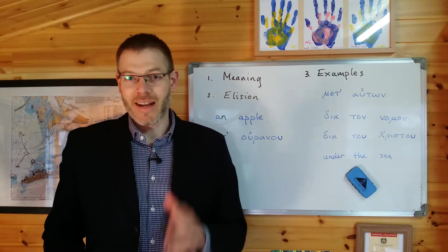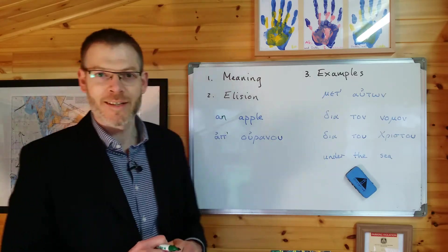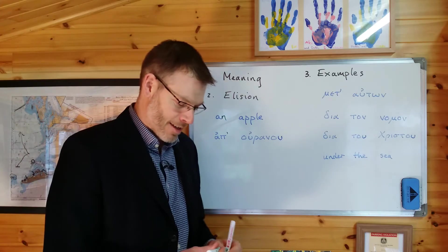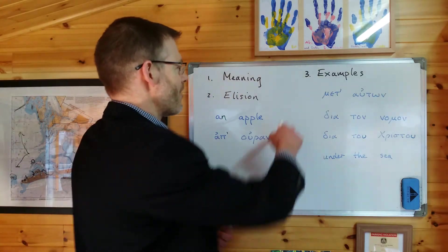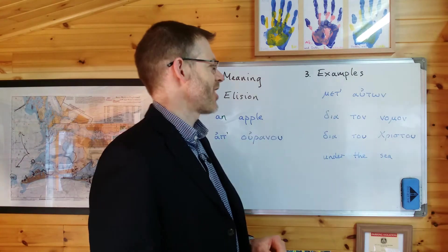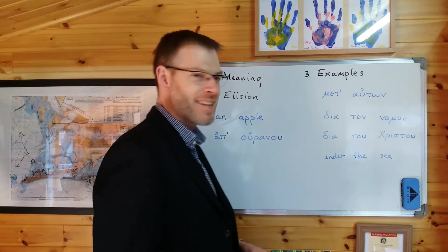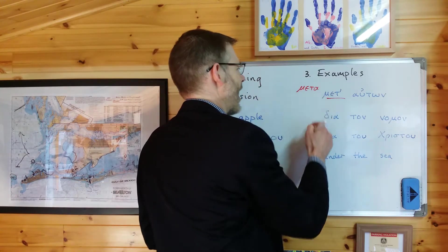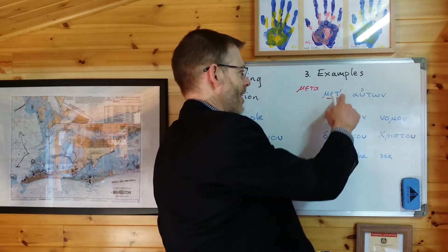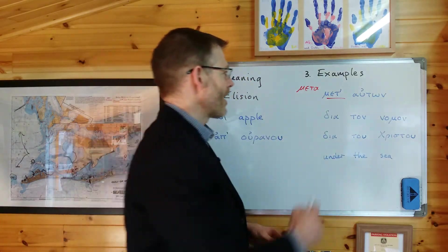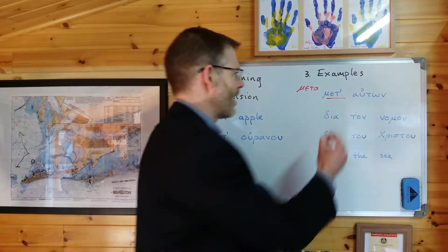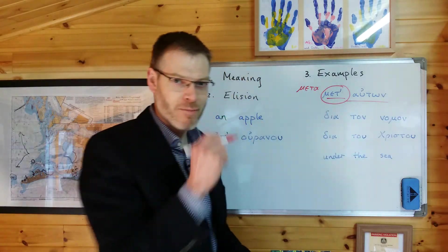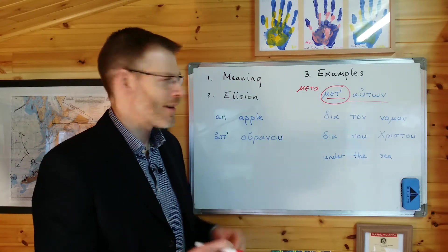Okay, so that's number two. Number three — just some examples. These examples are taken from practice exercises 4.2, just to help you think through how you translate these. Let's switch colour and go red. Very briefly, let's do these four. Met'-auton. You can immediately see that "met" is from meta and the terminal alpha has elided — hence the apostrophe. So met'-auton comes from meta-auton. What I like to do when I see a preposition is draw a circle around it and then underline its complement — it just helps me to see the structure of the sentence a little bit more clearly.